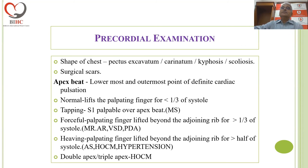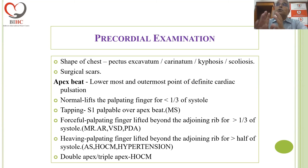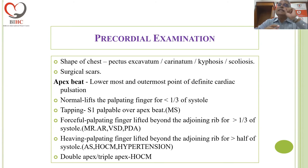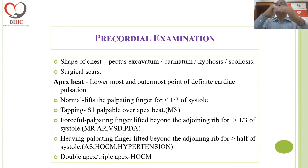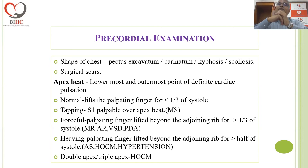Then you come to the precordial examination, where you note the shape of the chest using words like pectus excavatum, carinatum, kyphosis, or scoliosis, or surgical scars to be noted. After these general points, you come to the important finding of where the apex beat is. The apex beat is the lowermost and outermost point of definite cardiac pulsation. The normal apex beat is localized to one space, lifts the palpating finger to more than the level of the adjoining ribs, and the duration is less than a third of systole.